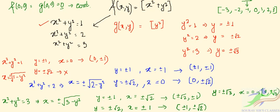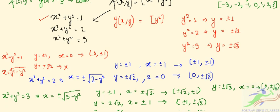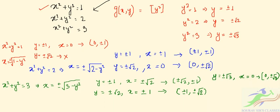Collecting all the points where both f and g are simultaneously discontinuous, we sum up: 2 points from x² + y² = 1, 6 points from x² + y² = 2, and additional points from x² + y² = 3. The total number of elements in the set E is 80.